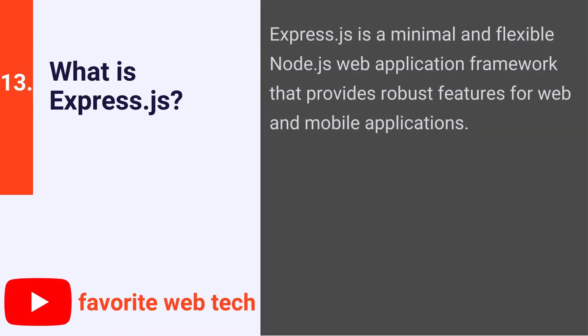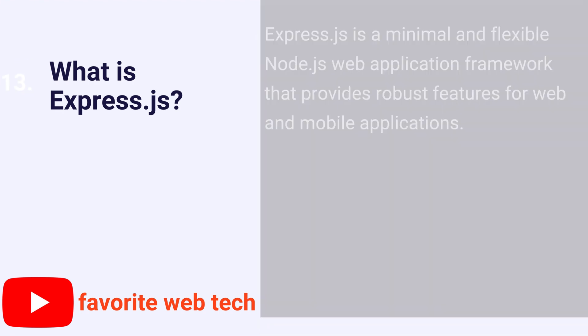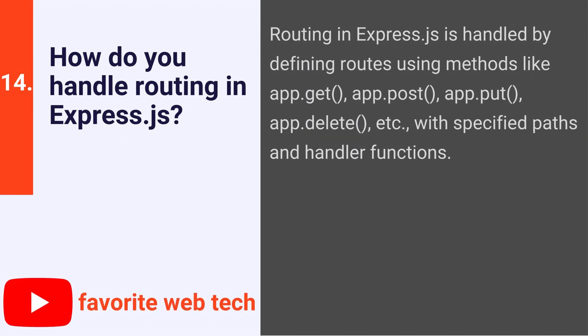What is Express.js? Express.js is a minimal and flexible Node.js web application framework that provides robust features for web and mobile applications. How do you handle routing in Express.js? Routing in Express.js is handled by defining routes using methods like app.get, app.post, app.put, app.delete, etc., with specified paths and handler functions.